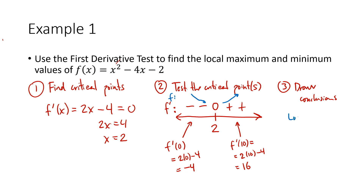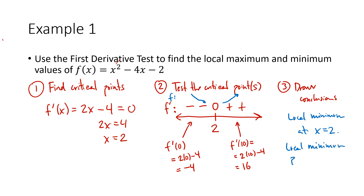That means I've got a local minimum at x equals two. Sometimes they'll ask for the actual points — the x and y values. If you need a y value, you plug back into the original function; plugging into the derivative tells you about slopes, plugging into the original function tells you about y values. So the local minimum point would be (2, f(2)), where you take x equals two and plug it into the original function f.